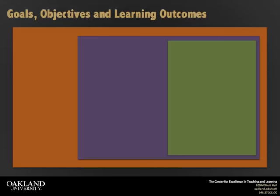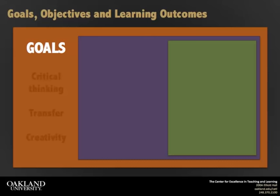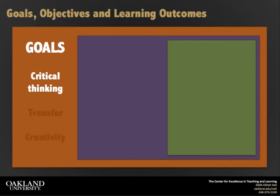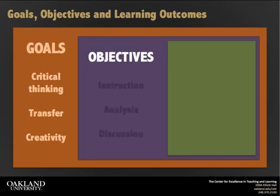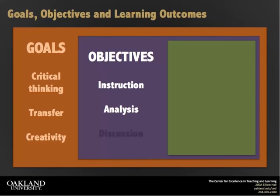We can think of these as encircling categories. Goals are the largest category, usually relating to larger aims such as critical thinking, transfer of content, or creativity. We lay out objectives within these goals as a map of the actions instructors will need to take to achieve those goals, such as specific instruction covered and case studies analyzed.